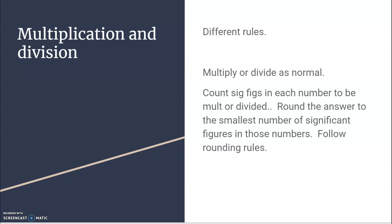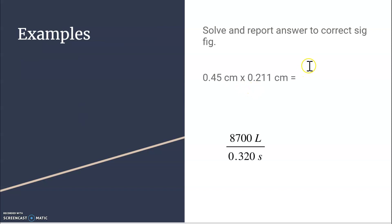What about multiplication and division? They have different rules — they do not look at the place at all. They look at the number of significant figures. Here are the rules: multiply or divide as normal, count the significant figures in each of the numbers you're multiplying or dividing, and round the answer to the smallest number of significant figures in those numbers. For example: 0.45 centimeters times 0.211 centimeters, and 8700 liters divided by 0.320 seconds.